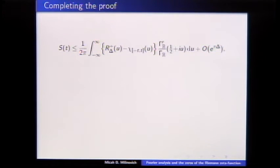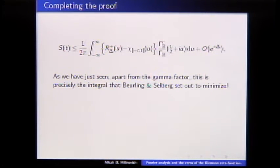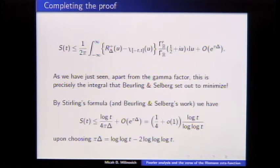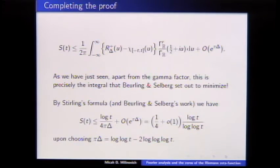Going back to the inequality we had: you just plug in Selberg's function, and he told us exactly what this integral is. There's a gamma prime over gamma factor, but this is essentially something like log u, so you can integrate by parts and it goes away. Apart from that gamma factor, this is precisely the Beurling–Selberg problem we're trying to minimize. No work had to be done — just plug in the answer — and Selberg has minorants for characteristic functions of intervals too, so you can get a lower bound for S(t) the same way. This was the fourth proof we found; we would have been much happier if it had been the first.